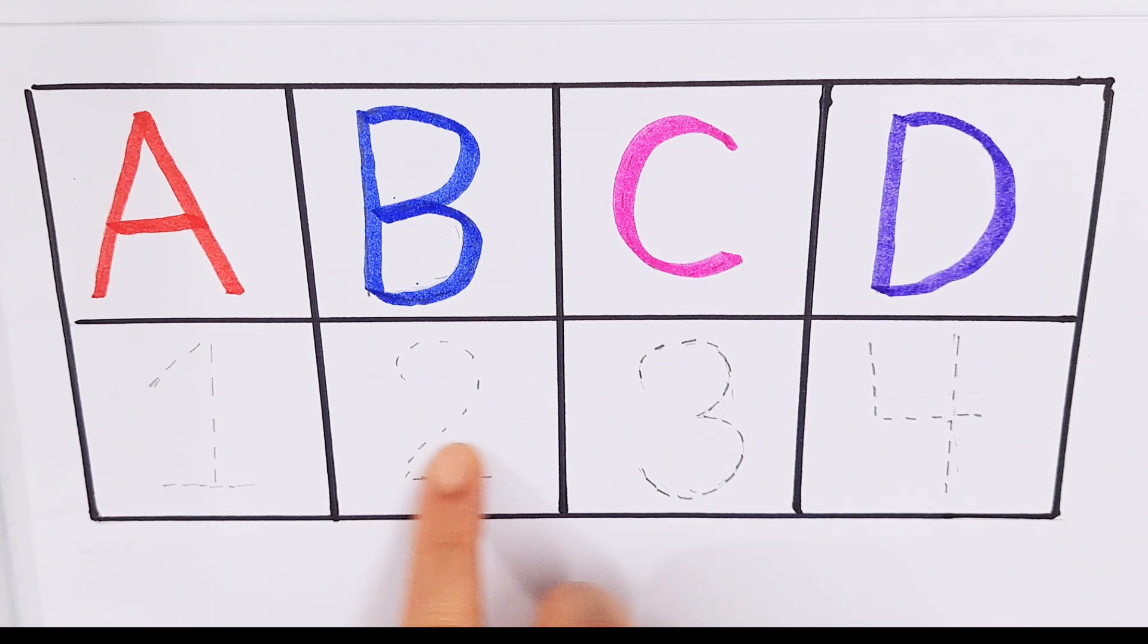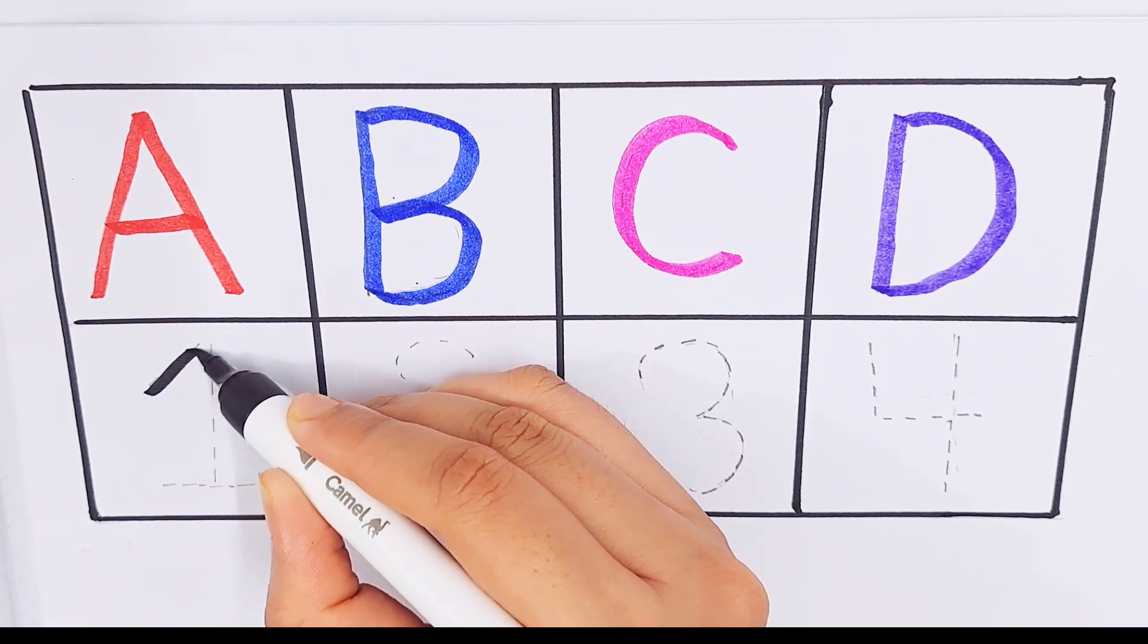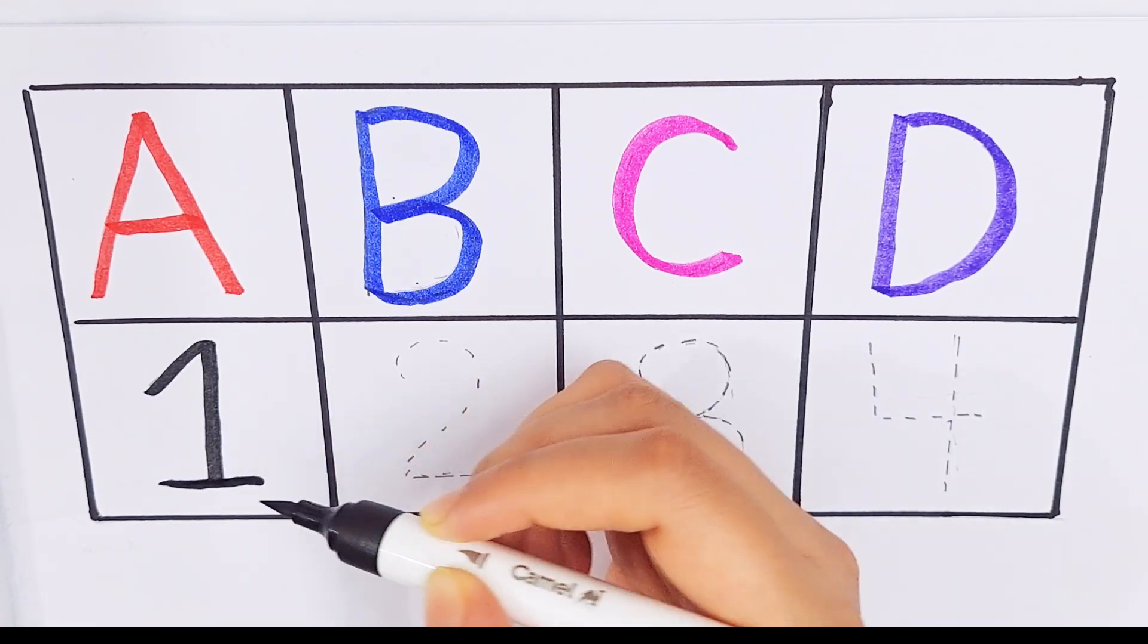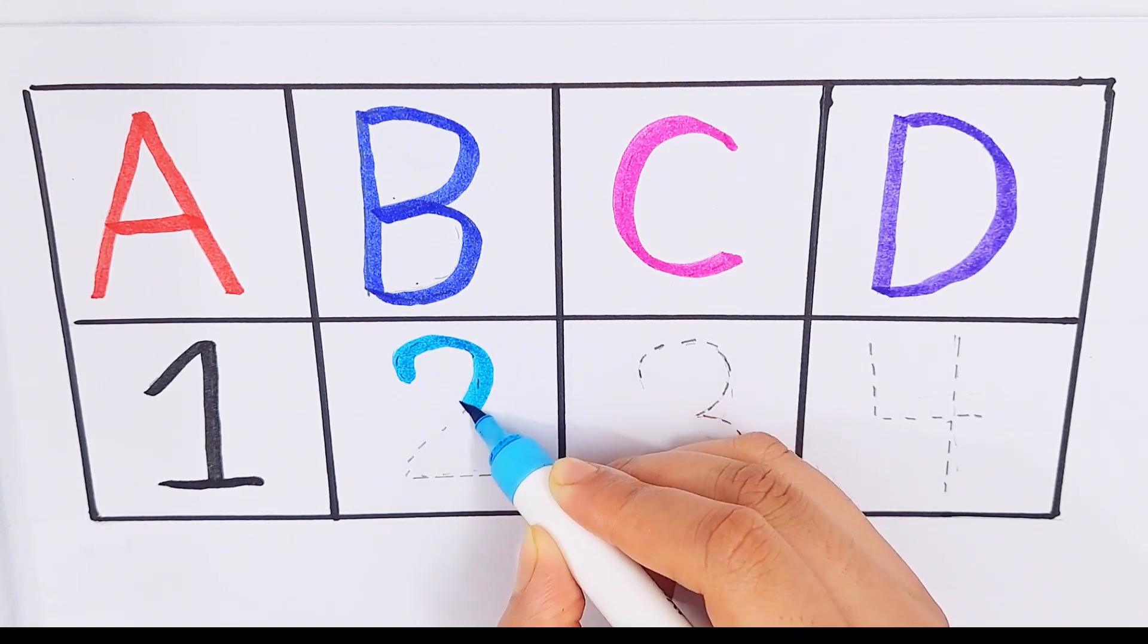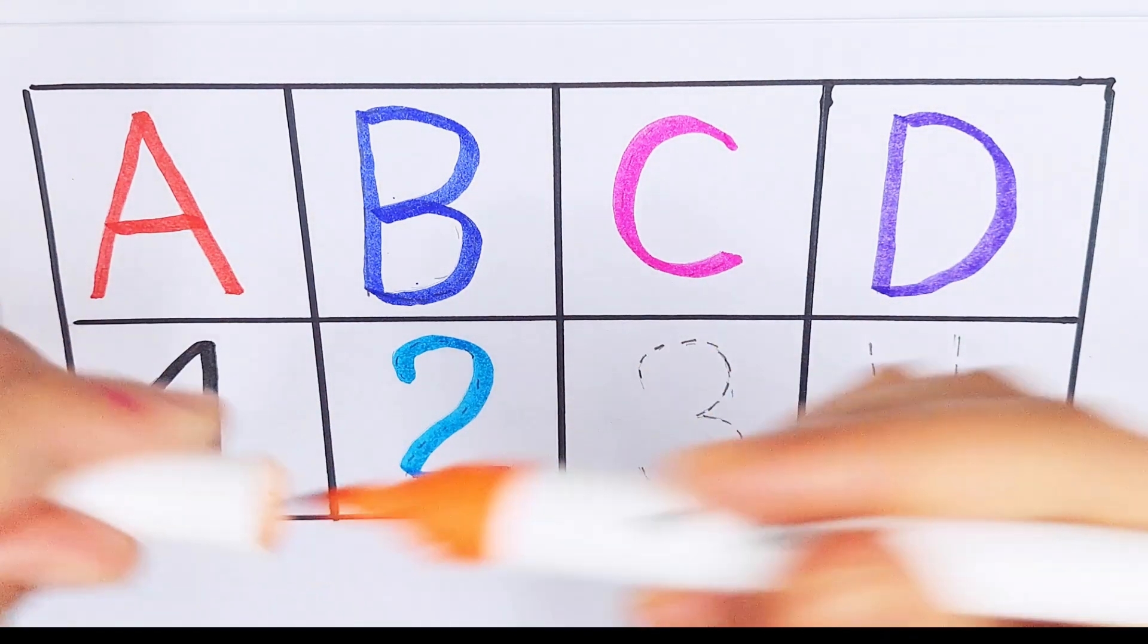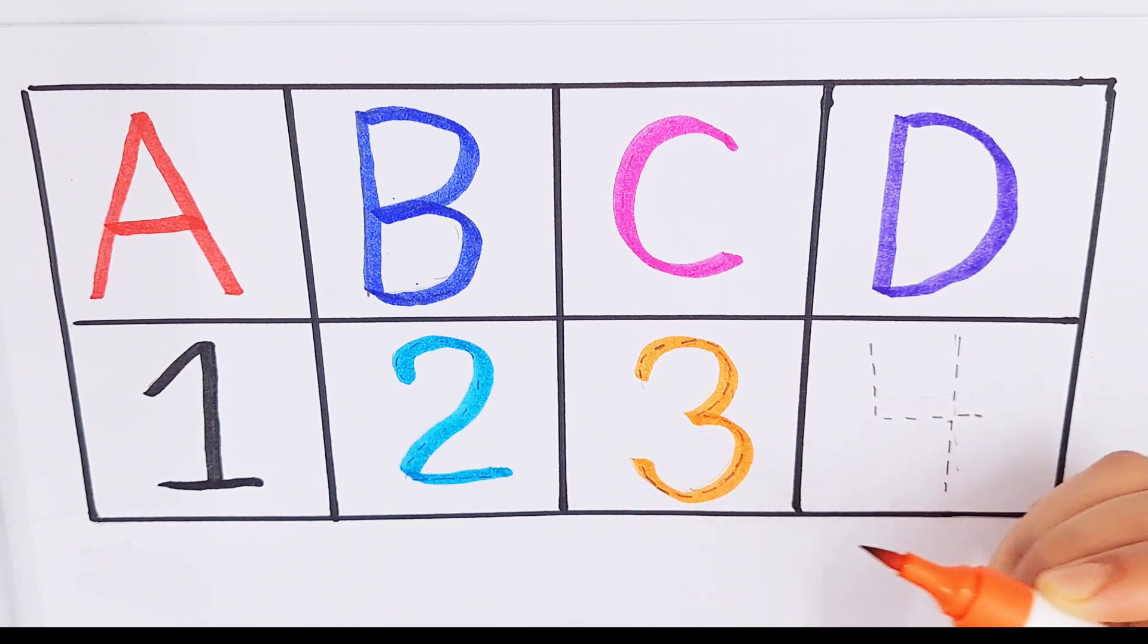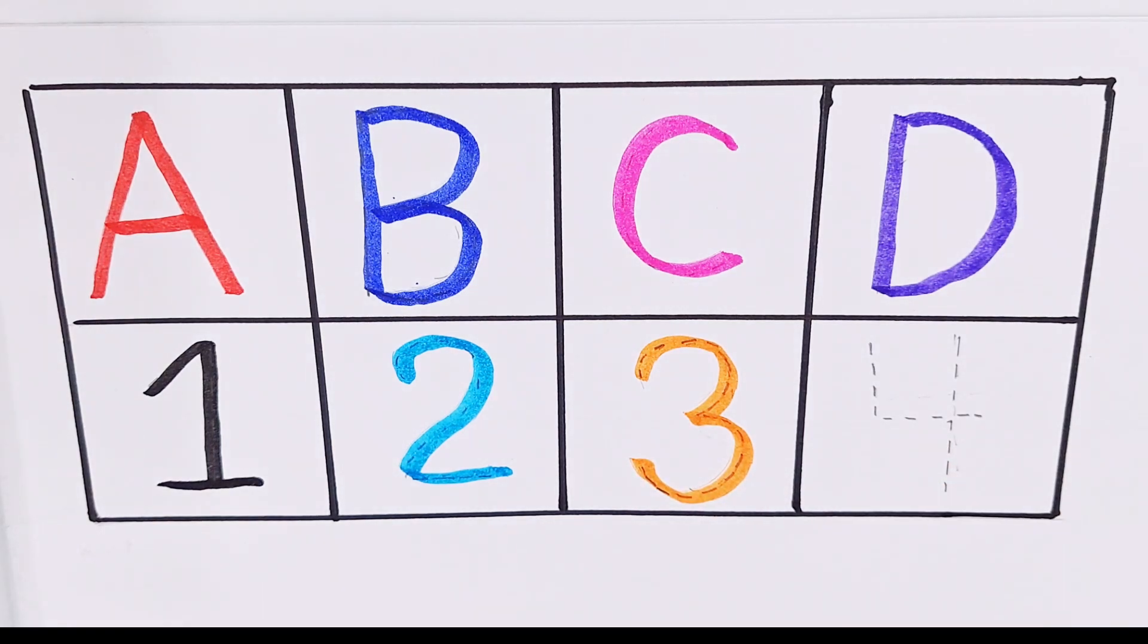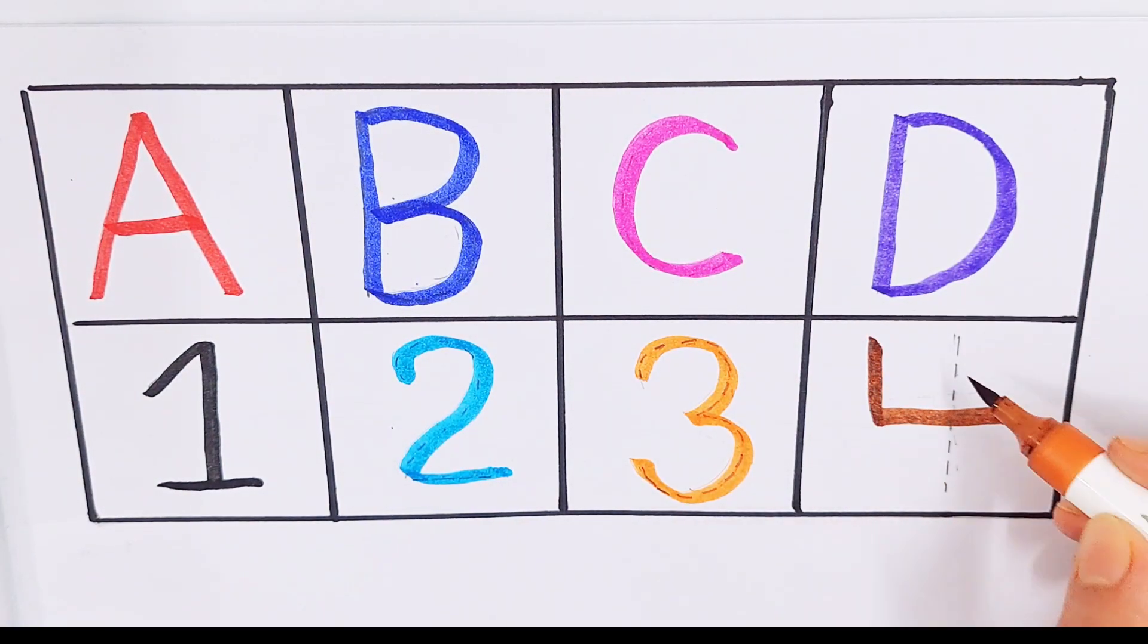Let's count numbers. Black color, number one. Sky blue color, number two. Orange color, number three. Brown color, number four.